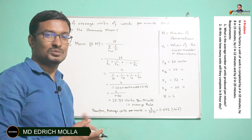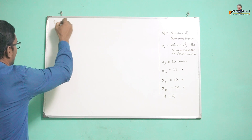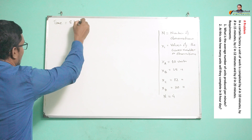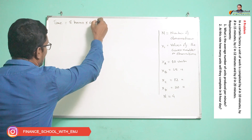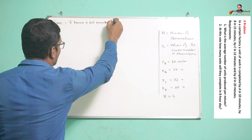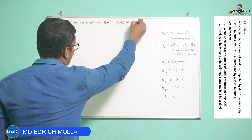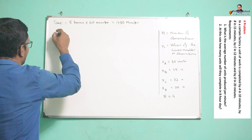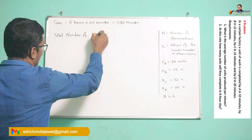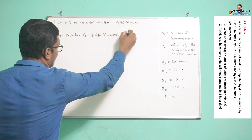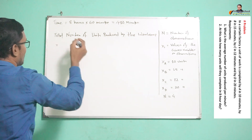Now we are going to compute the next requirement — what would be the number of units produced in 8 hours. We have to multiply by 60 minutes in an hour, so 8 hours equals 480 minutes. We can now find the total number of units produced by the workers using the appropriate formula.